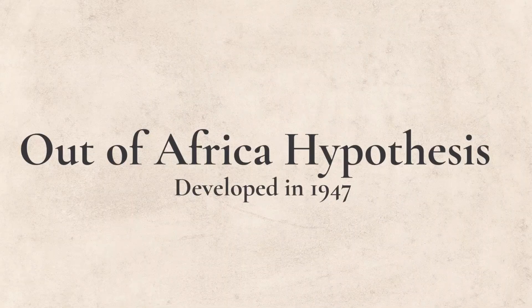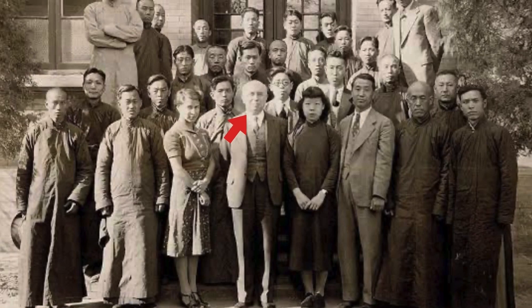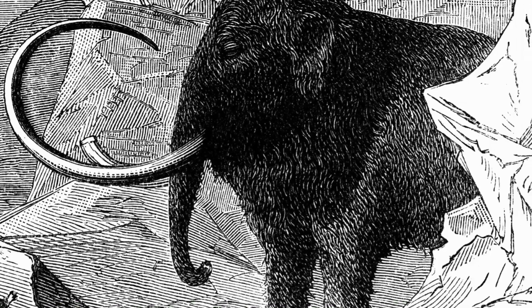The first is called Out of Africa, and it's true to its name. The Out of Africa hypothesis was developed in 1947 by Franz Weidenreich and argues that modern humans originated in the late Pleistocene — a period of time about 100,000 to 200,000 years ago — in Africa. It also argues that this species rapidly expanded and ended up replacing all the other archaic humans in other parts of the world.